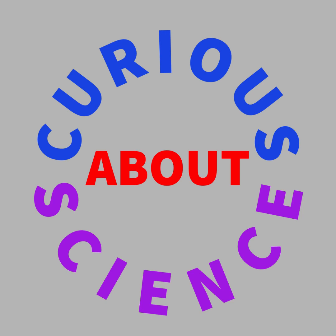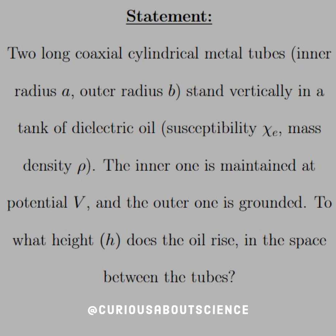Alright, we've got a pretty cool problem today. Let's get started. Our statement reads: two long coaxial cylindrical metal tubes, inner radius a and outer radius b, stand vertically in a tank of dielectric oil.